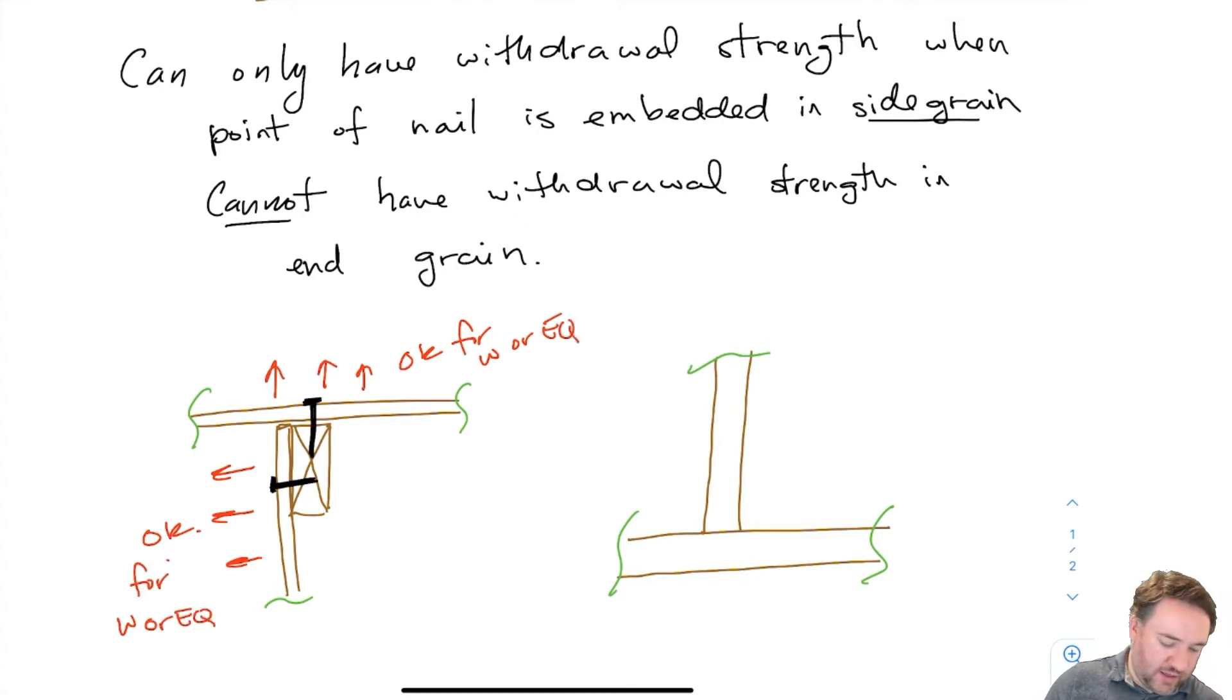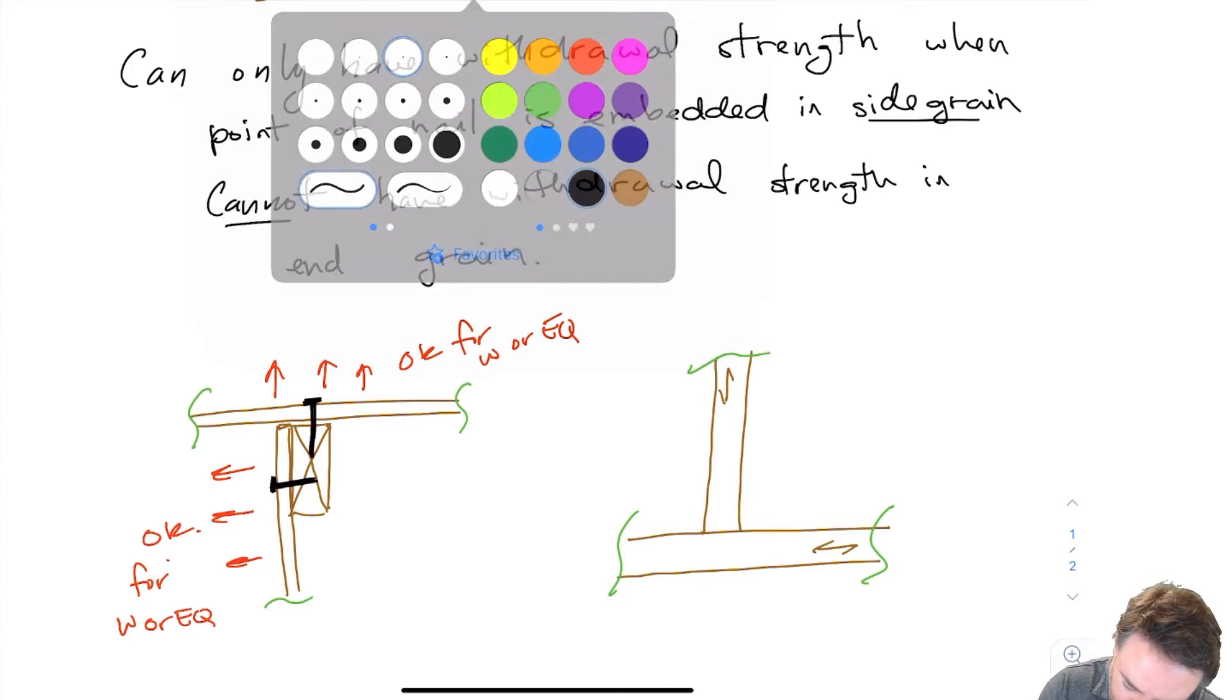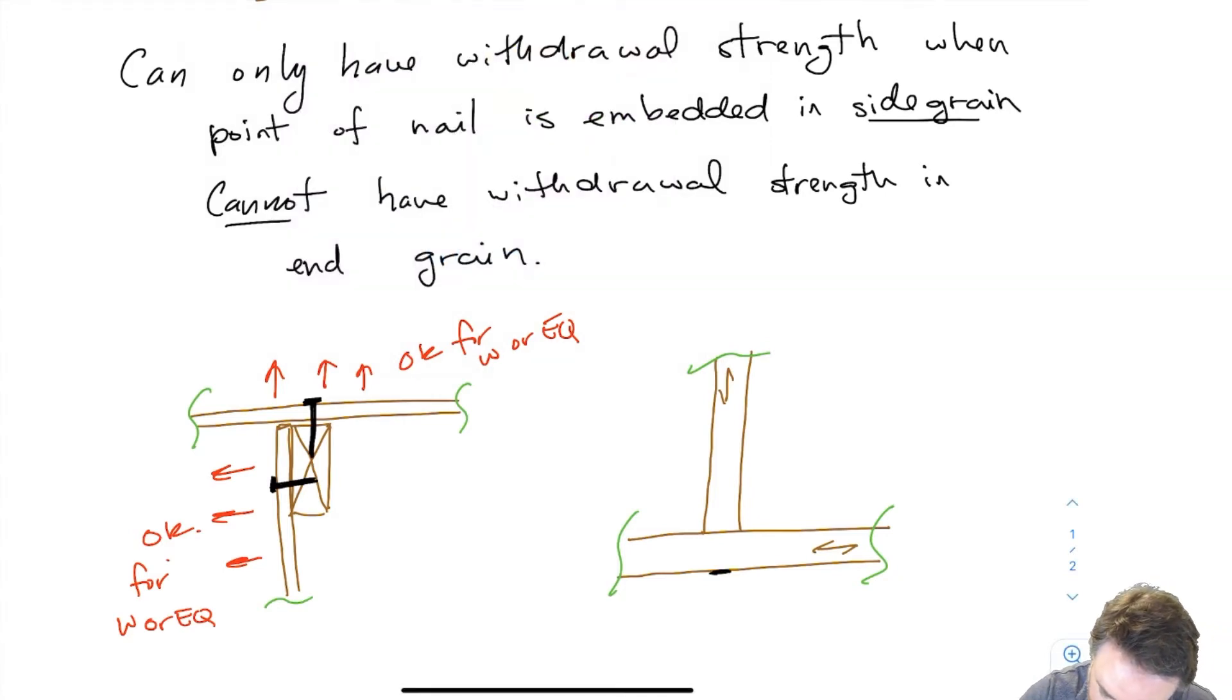Okay, on the right here we know grain is longitudinal like this right. So if I am putting a nail like this pointing upwards and then I'm trying to resist this uplift force, this is not okay.